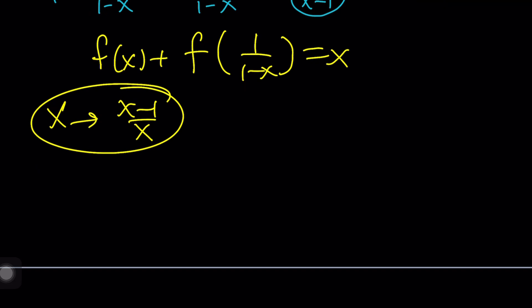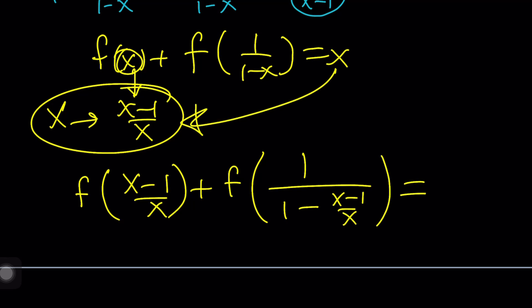If you do that, you're going to get the following: f of x minus 1 over x, this x is being replaced with that, and then plus f of 1 over 1 minus h, which is x minus 1 over x. Again, another thing that you need to simplify. And on the right-hand side, x will be replaced with that, giving us x minus 1 over x. Make sense? So far, so good. Are you following? I hope I didn't lose you.